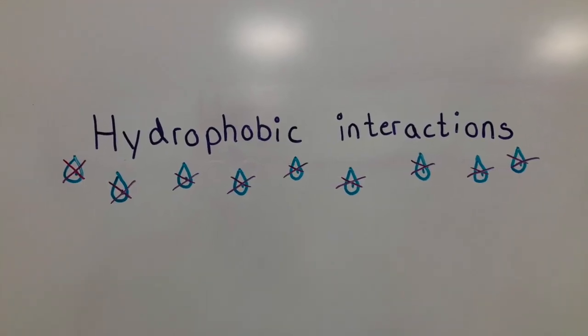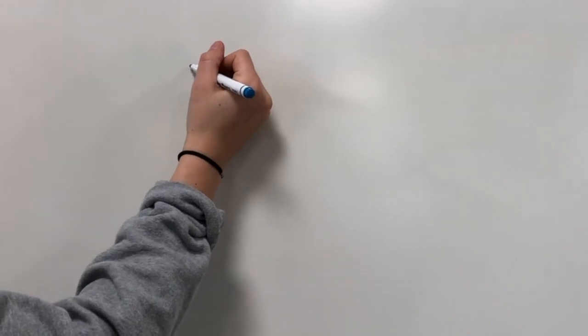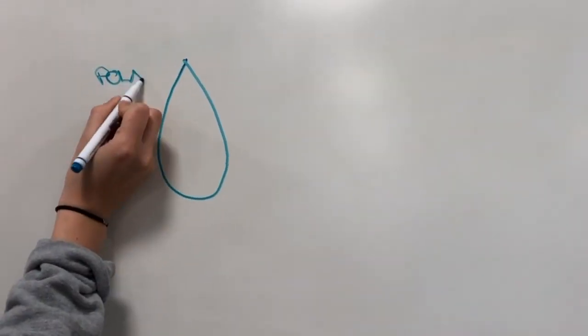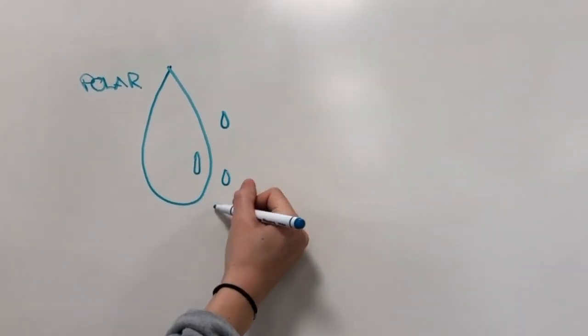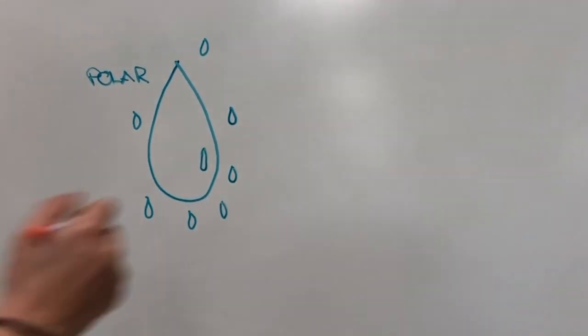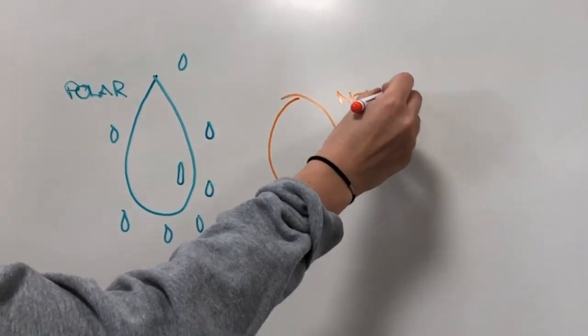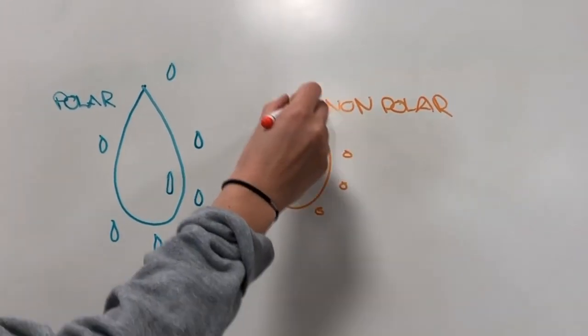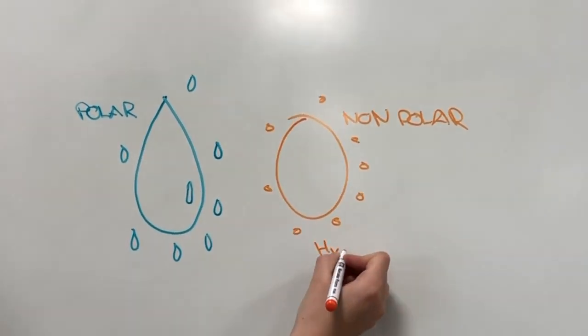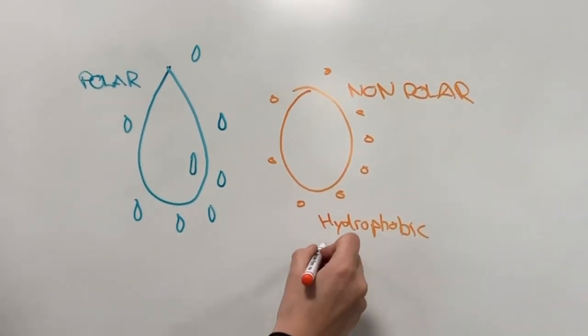Hydrophobic interactions describe the relationship between water, which is a polar molecule, and non-polar molecules. Non-polar substances have no polarity and do not interact favorably with water. We can say that they are hydrophobic, aka water-hating.